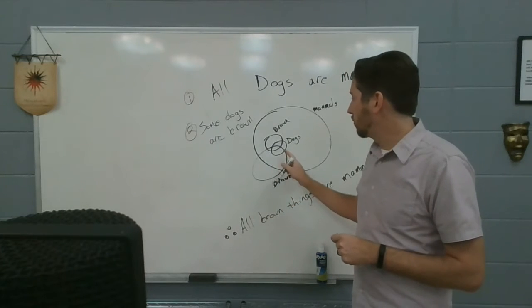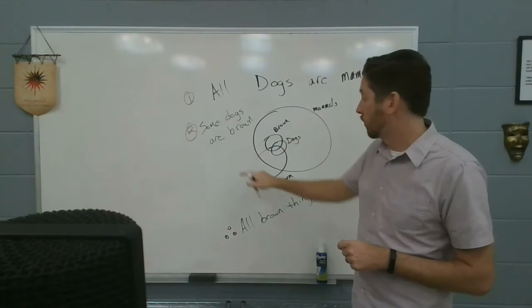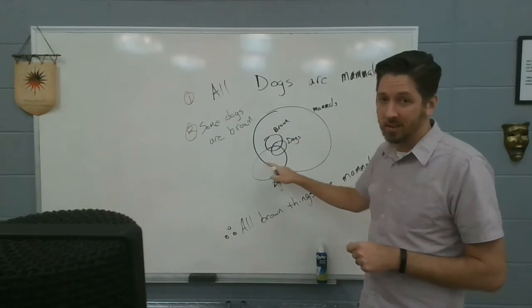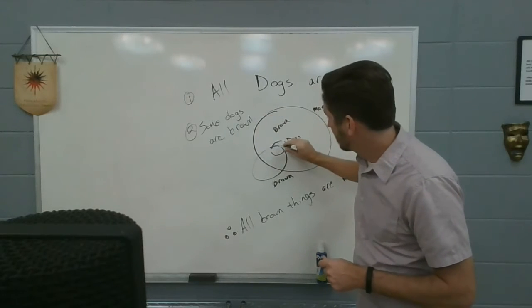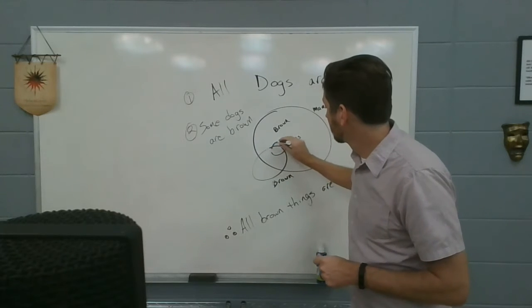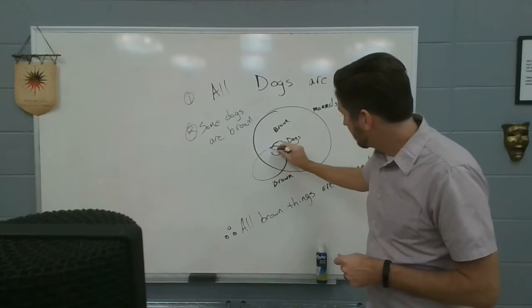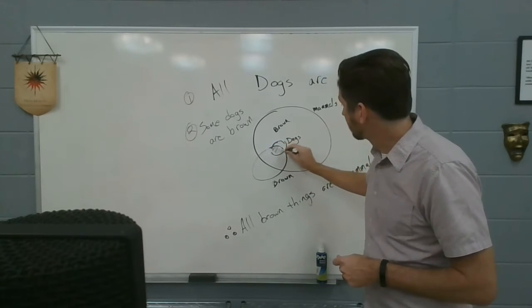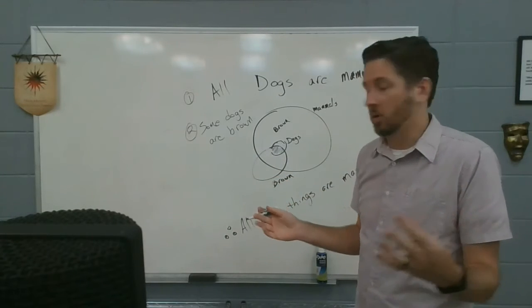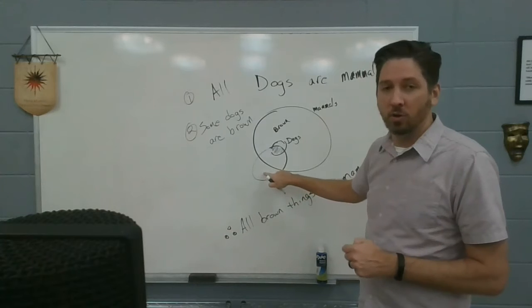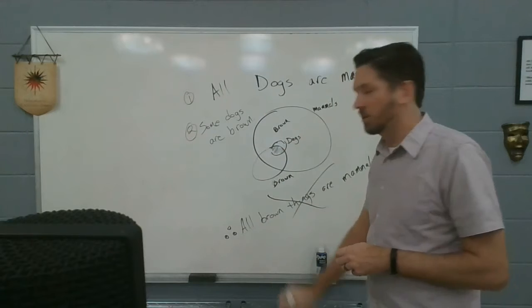I could have drawn the brown circle so big that it goes outside because my statement is simply that some dogs are brown. And look at this circle. If this is my brown circle, I've got some dogs are brown. There's my brown dogs. These are the brown dogs right here. And here's some brown mammals. And here's some brown things that aren't mammals at all. We don't know what they are. And because I can draw the circle this way and still fit both of these premises, then this conclusion is invalid.